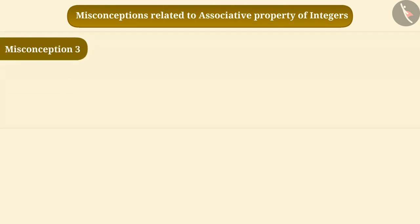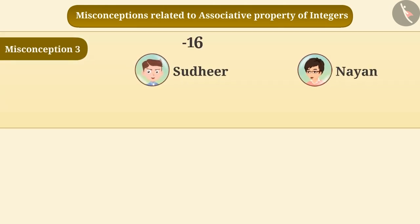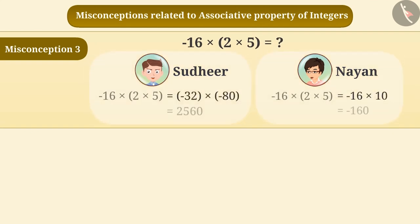Misconception 3. Sudhir and Nayan are solving the expression minus 16 multiplied by 2 multiplied by 5. They solved it in the following way. Find out who is correct.